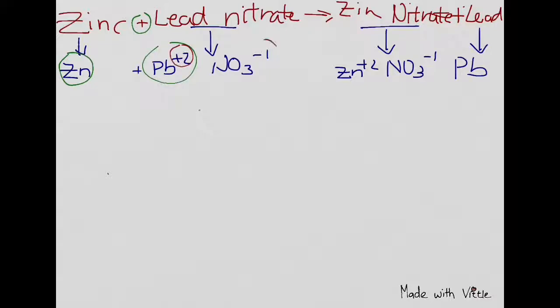we have +2 and -1 here, so we need 2 to balance it out. So we write Pb(NO3)2 to balance it out.